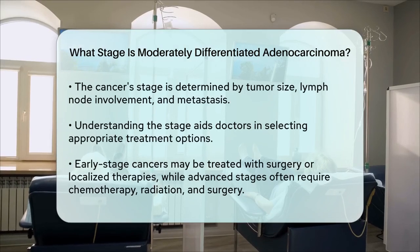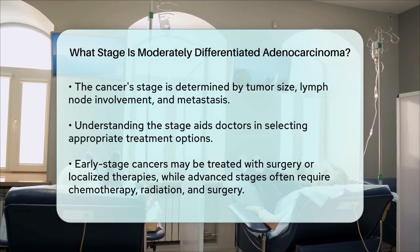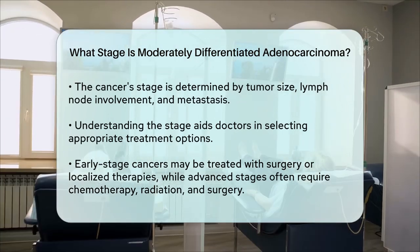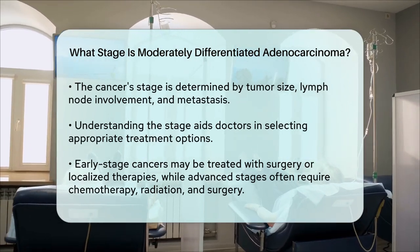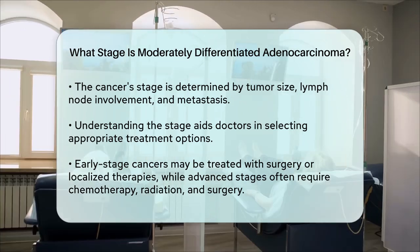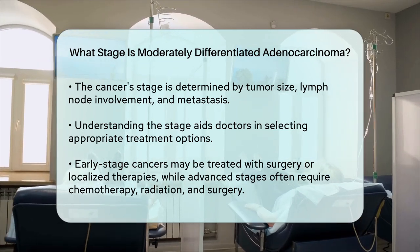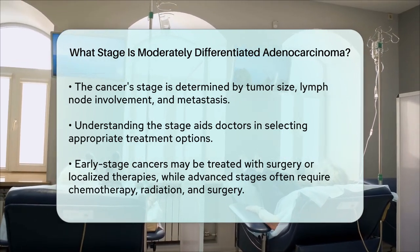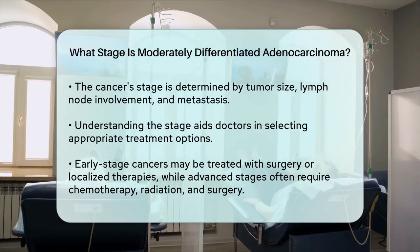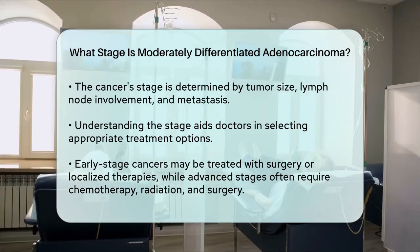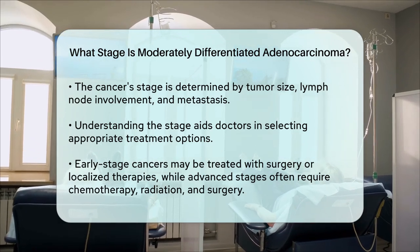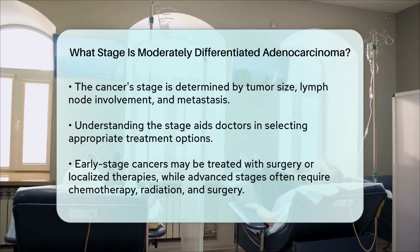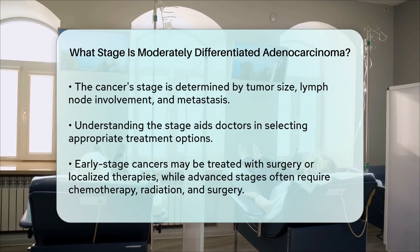So the stage of moderately differentiated adenocarcinoma depends on the size of the tumor, whether it has spread to lymph nodes, and whether it has metastasized to other parts of the body. Understanding the stage is crucial because it helps doctors decide on the best treatment options and gives a clearer picture of the prognosis. If the cancer is at an early stage, treatment might involve surgery or localized therapies, whereas more advanced stages might require a combination of treatments including chemotherapy, radiation, and surgery. In summary, the stage of moderately differentiated adenocarcinoma is determined by the extent of the cancer's spread, not just the appearance of the cells.